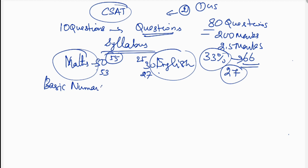Basic numeracy topics include: numbers, fractions, time and work, time and distance, percentage, profit, and loss. That covers the aptitude topics.